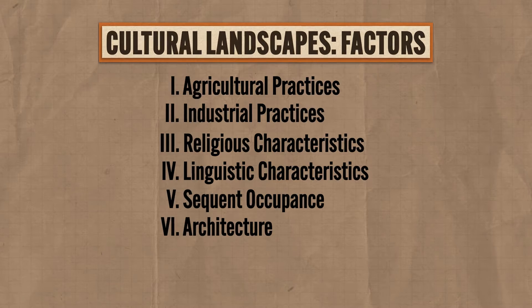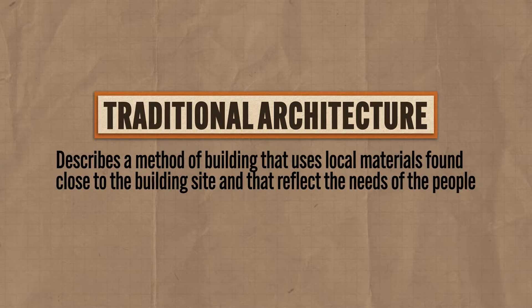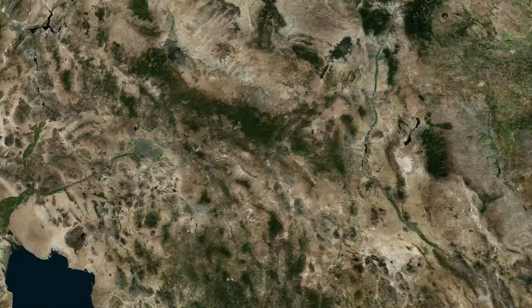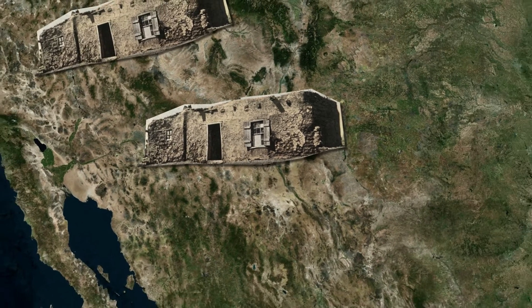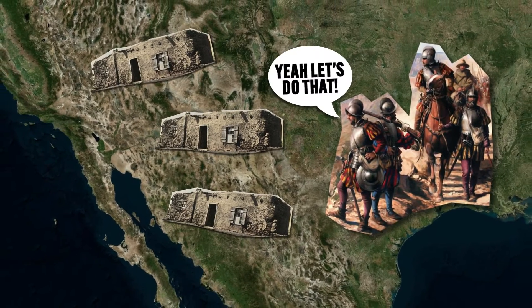Sixth, the presence of traditional or postmodern architecture helps us understand a cultural landscape. Traditional architecture describes a method of building that uses local materials found close to the building site and reflects the needs of the people. For example, adobe-style homes in the American Southwest were developed by the Pueblo people who lived there from time immemorial. By building their houses out of local mud, they were able to stay warm in the winter and cool in the summer. When Spanish colonizers arrived, they adopted Pueblo techniques for their own purposes. And to this day, even though we have air conditioning and central heating, people still build their homes in this traditional manner — and that tells us a lot about their culture.